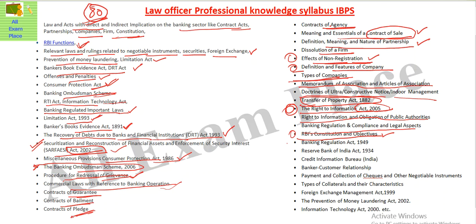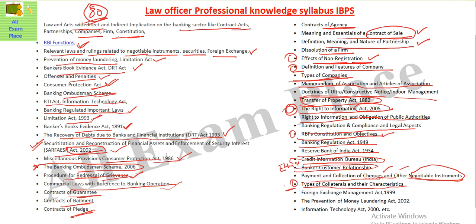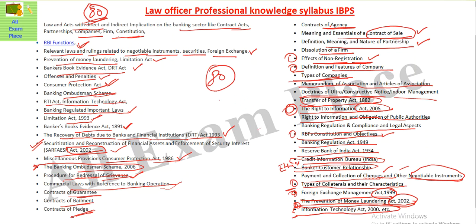Banking Regulation and Compliance and Legal Aspects — RBI constitution and objectives, RBI constitution of rules, RBI guidelines related to current law. Then the Banking Regulation Act, Reserve Bank of India Act, Credit Information Bureau. Banker-Customer Relationship and Ethics. Payment of collections, cheques and other negotiable instruments — different types, types of collateral and their characteristics. Foreign Exchange Management Act 1999 — important. Prevention of Money Laundering — also very important — Act 2002. Then lastly, the Information Technology Act. These are the details of the Law Officer syllabus with 80 marks weightage.